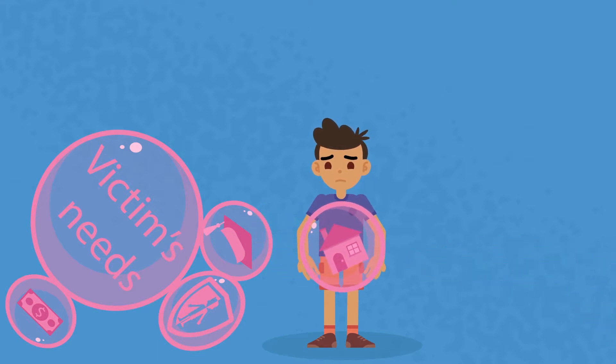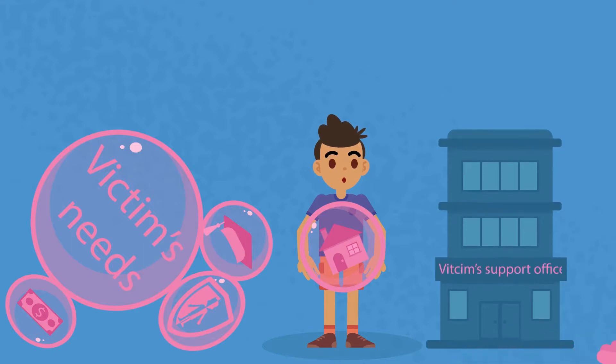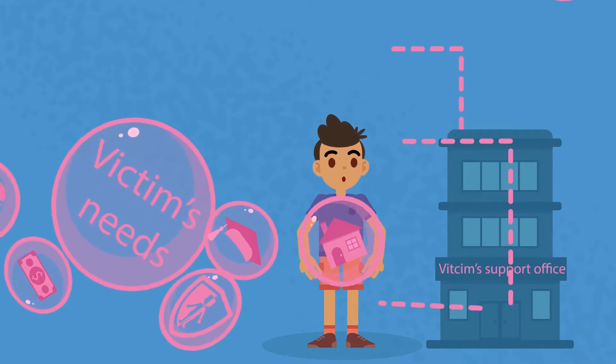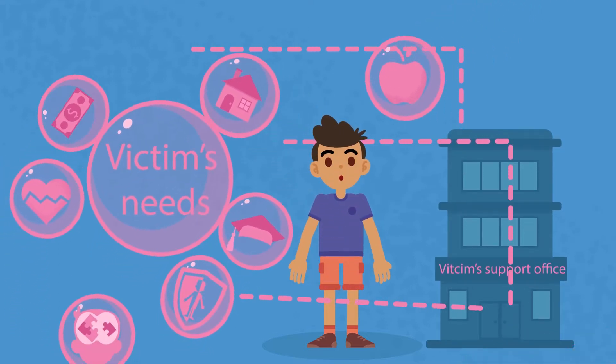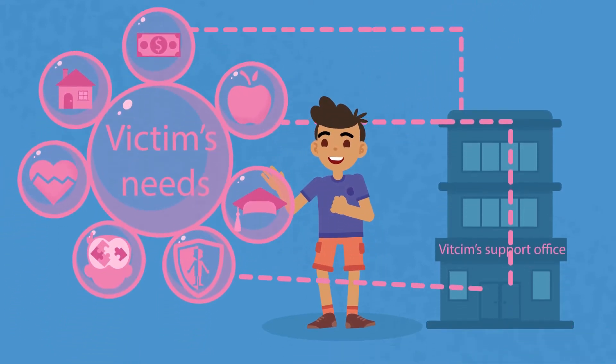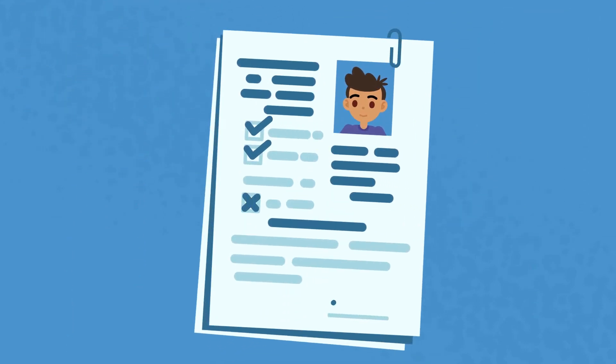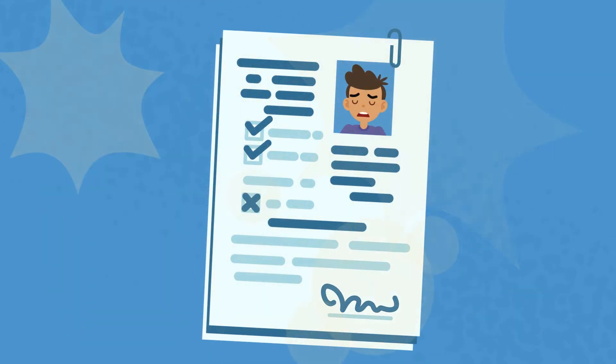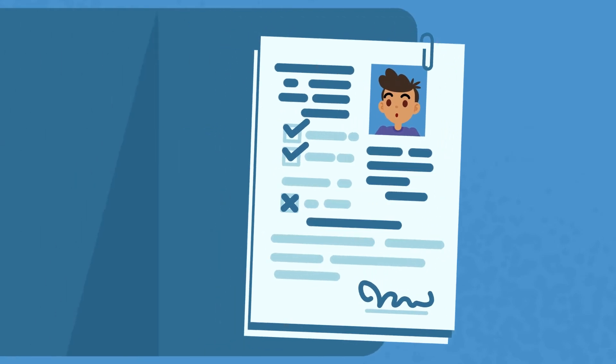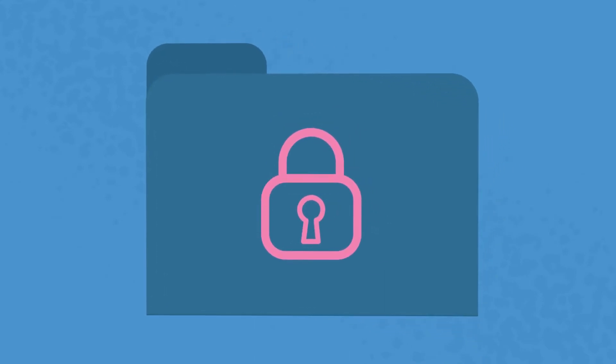The directive recommends the establishment of one-stop shops that victims can turn to for comprehensive support. Confidentiality is a central aspect of the rights of child victims, and the division of tasks among services should foresee relevant safeguards to guarantee that confidentiality is preserved.